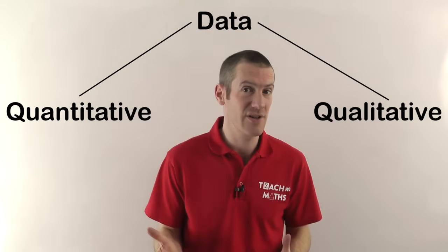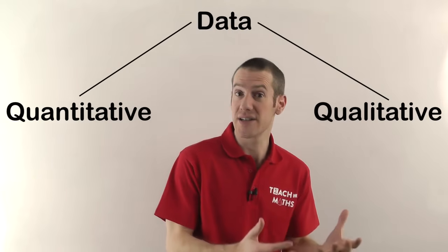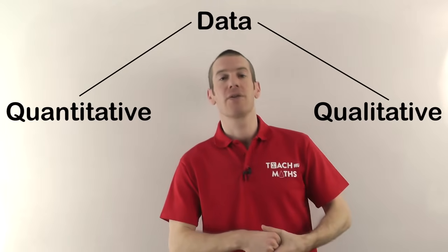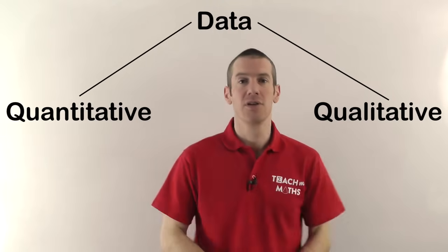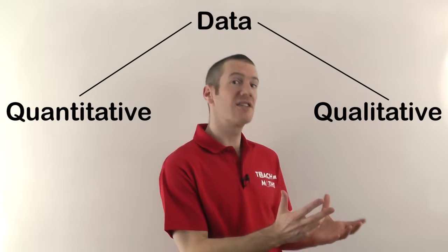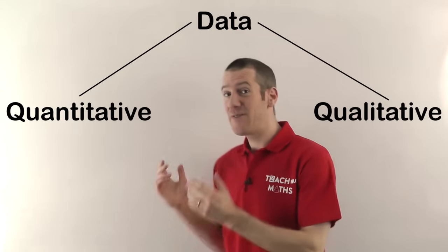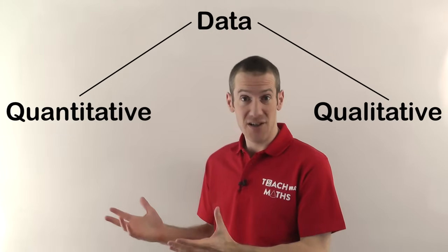If it's not a number, it's qualitative. So if you ask somebody what color their hair is, they might say black. That's not a number, it's a color, it's a quality of that person, so that will be qualitative data. So quantitative data if it's a number, qualitative data if it's not a number. Now if it's quantitative, if it's a number, then you can further break that down into two different types: you've either got discrete data or continuous data.